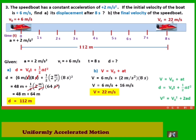The final speed is 6 plus 16 equals 22 meters per second. The speed boat accelerates at 2 meters per second squared, so after one second 6 becomes 8, after another second 10, then 12, 14, 16, 18, 20, and finally after 8 seconds the speed is 22 meters per second — confirming the final velocity.